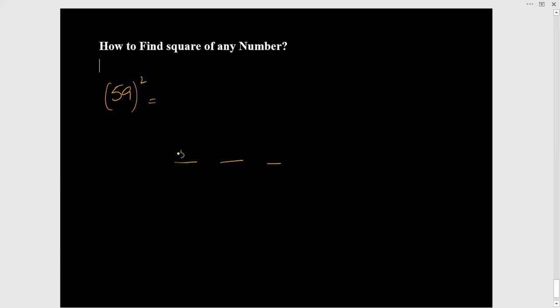Take 5 squared and 9 squared. 9 squared is 81, and 5 squared is 25. So you take 81 and put it there. Take the 1 and put the 8 over there, right?